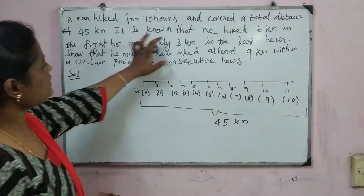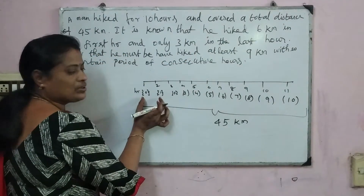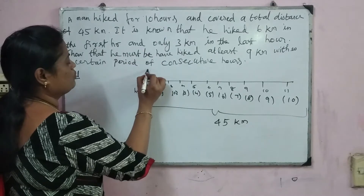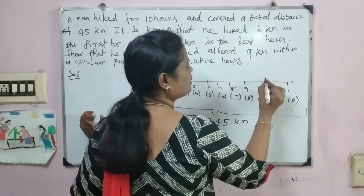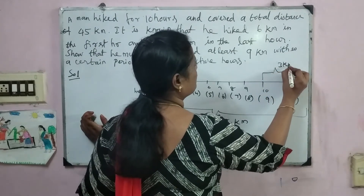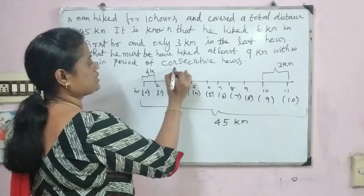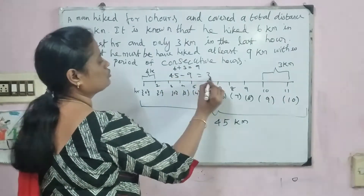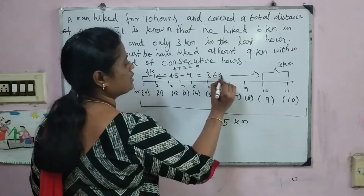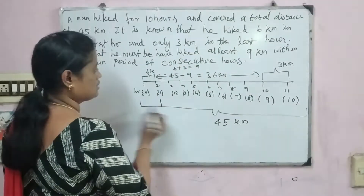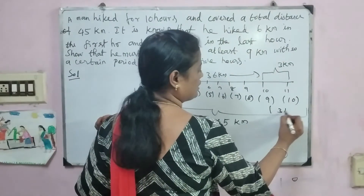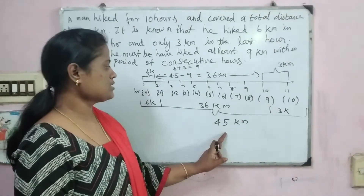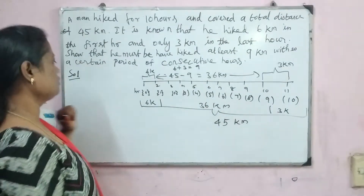He hiked 6 km in the first hour and 3 km in the last hour. Adding these: 6 plus 3 equals 9 km. The total distance is 45 km, so 45 minus 9 equals 36 km remaining for the middle hours. So the first hour accounts for 6 km, the last hour accounts for 3 km, and the remaining hours account for 36 km.